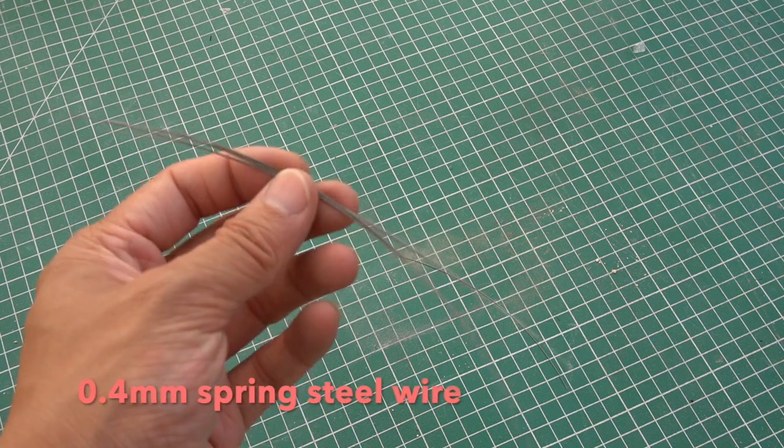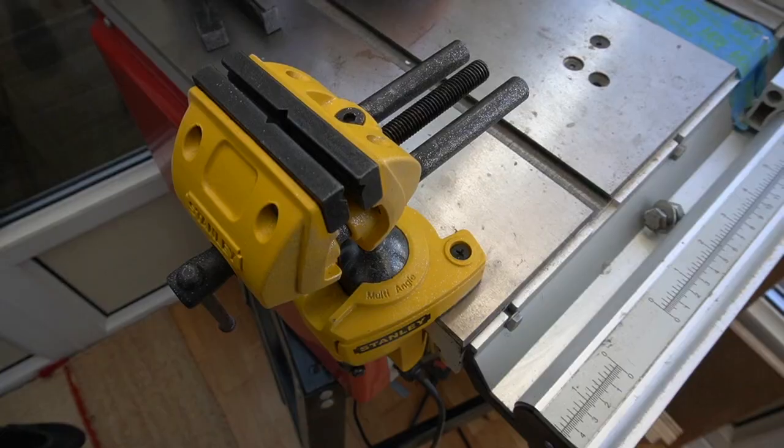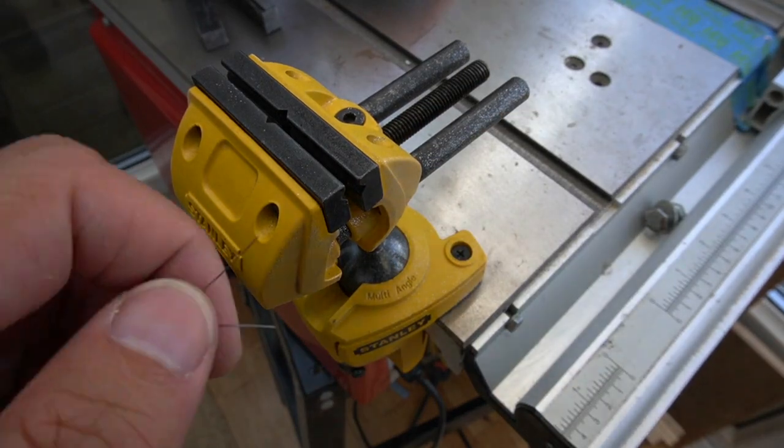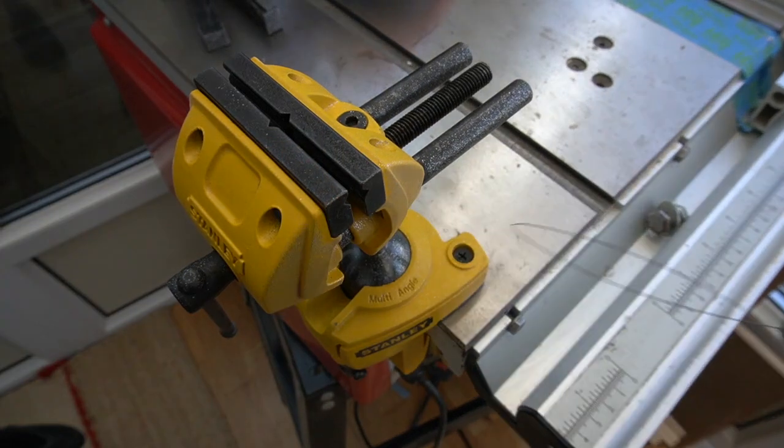Moving on, we pick some spring steel wire for our loop. This loop is folded in half and we carefully apply it to the chuck of a drill.